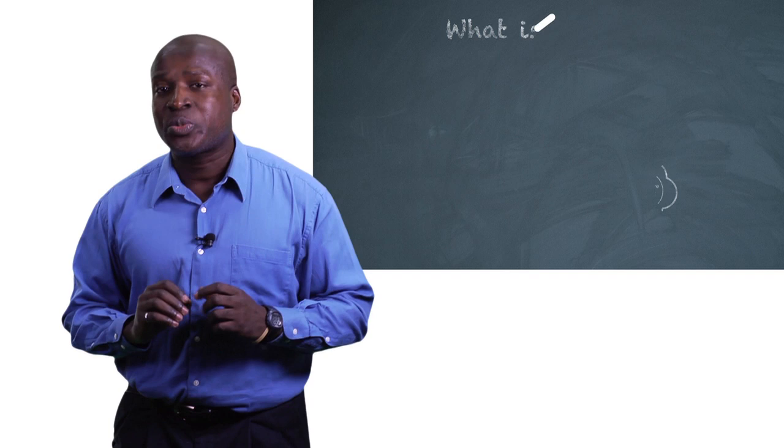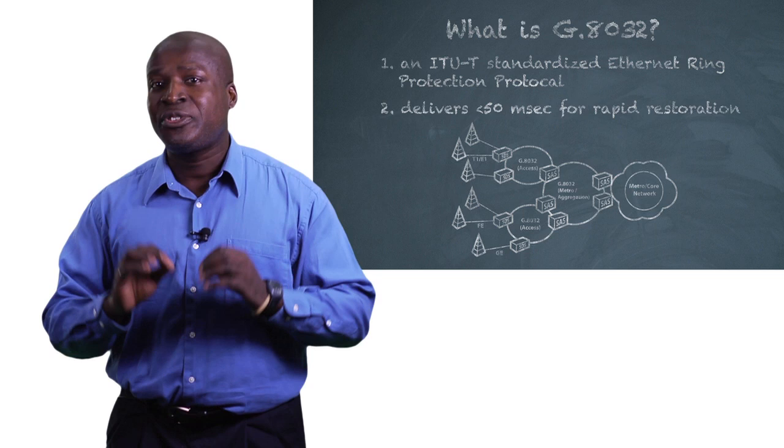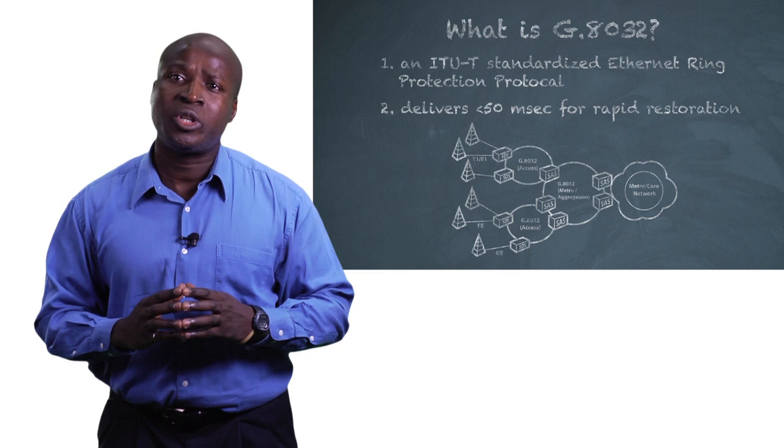G8032 is an Ethernet ring protection protocol that has been standardized within ITU. It provides sub-50 millisecond protection switching for network constructs that form a closed loop, or said another way, for network constructs of their rings.